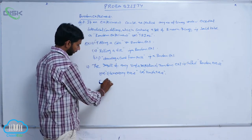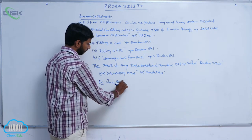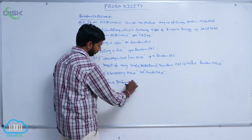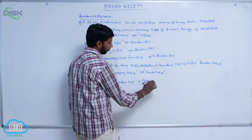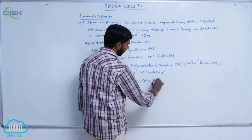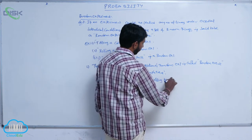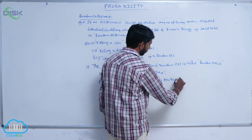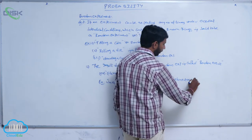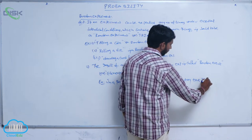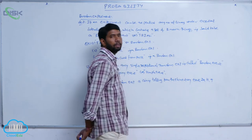For example, in a random experiment where a coin is tossed, the elementary events are H and T — that is, head or tail.